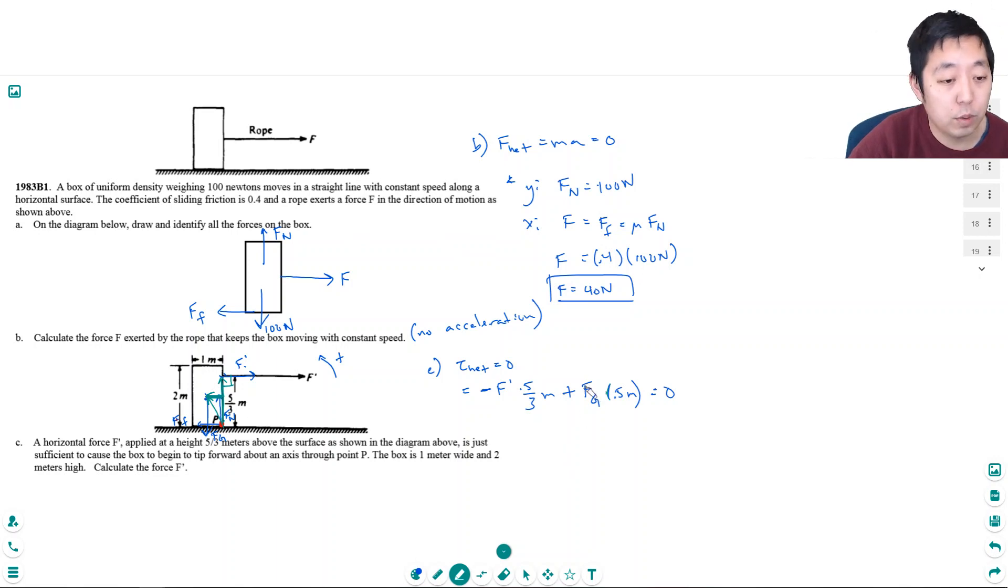F_g, by the way, is the force of gravity, it's 100 newtons. So this is really F prime. If I bring this to the other side, times five-thirds equals 100 times 0.5. That's 50 newton-meters, really. And then F prime is equal to three-fifths times 50. That's equal to 30 newtons.